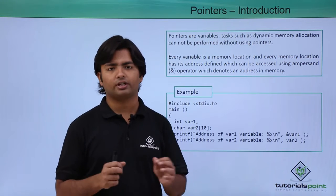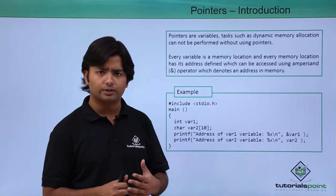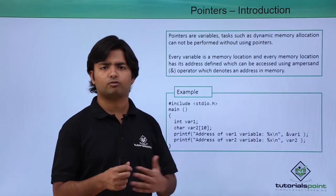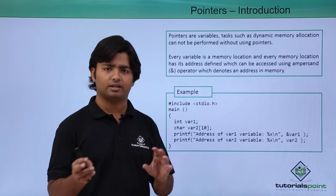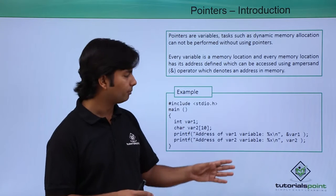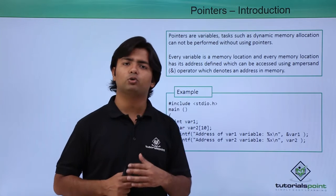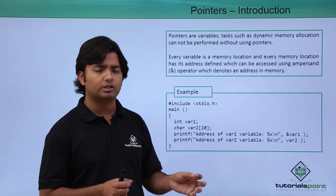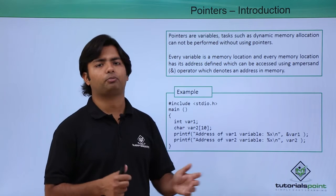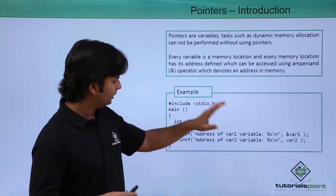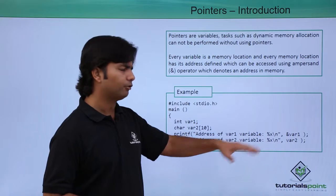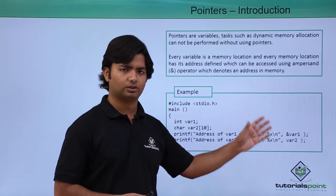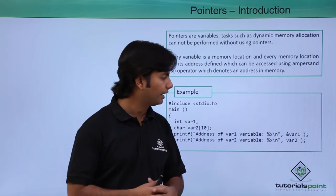You can also use %d if you want the address in numeric format, and specifically we have one more format specifier for pointers which is %p. In this particular example we will use the %x format specifier.